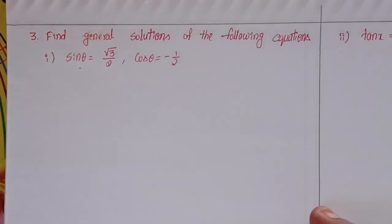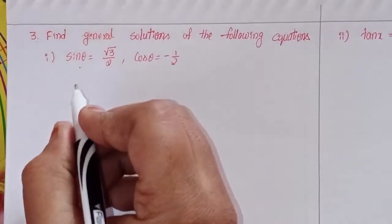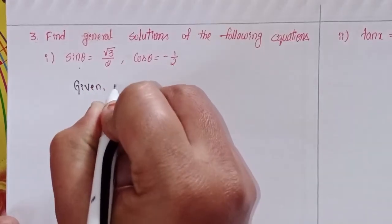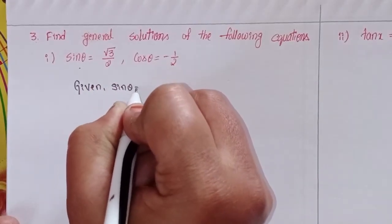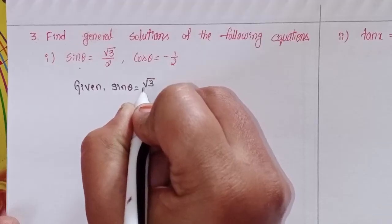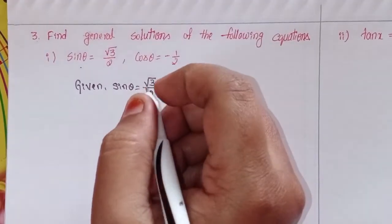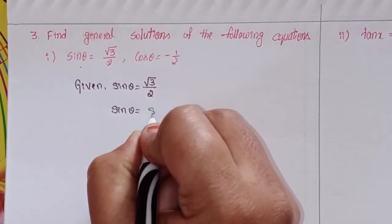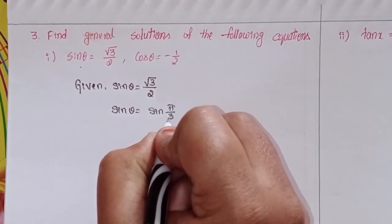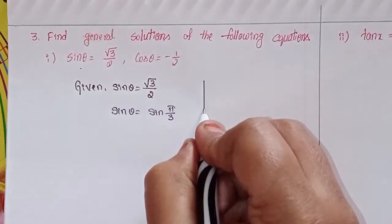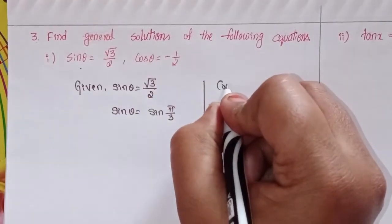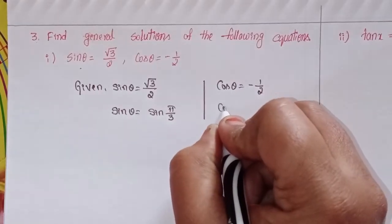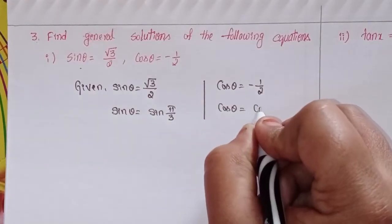Next, we explain the third equation. Given: sin θ = √3/2, that means sin θ = sin(π/3). And cos θ = -1/2.